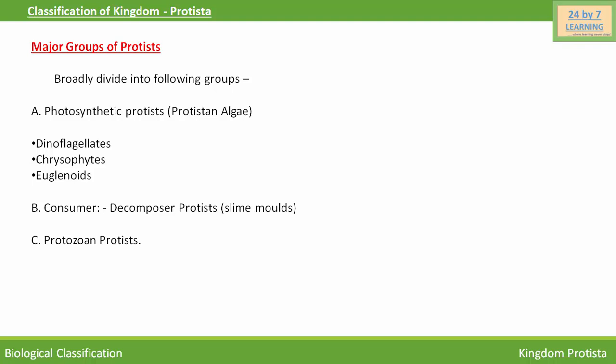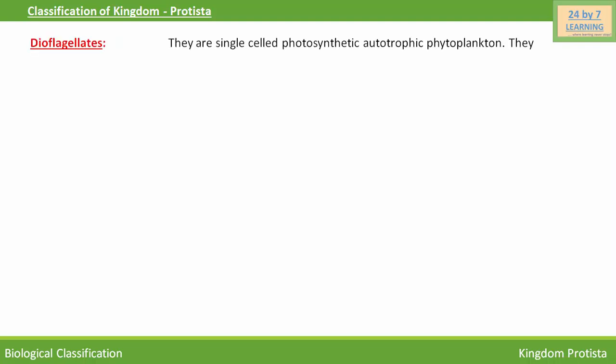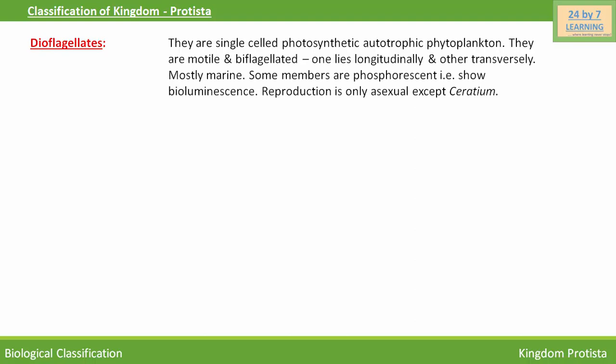There are also protozoan protists, which include primitive animals. We start with dinoflagellates. They are single-celled, photosynthetic, autotrophic phytoplankton. They are motile and biflagellated — one flagellum lies longitudinally and the other transversely. They are mostly marine, and some members are phosphorescent.